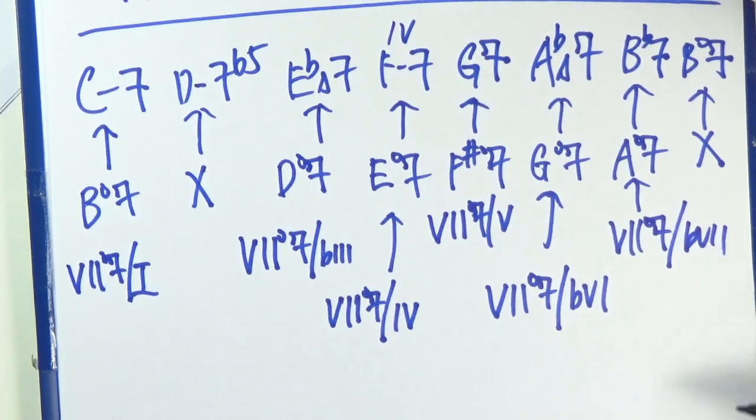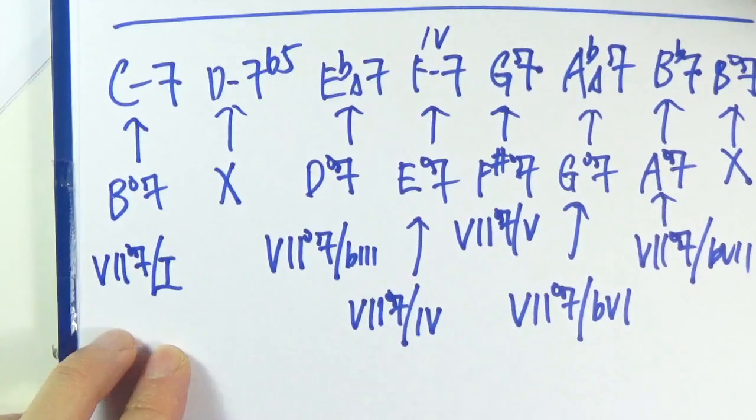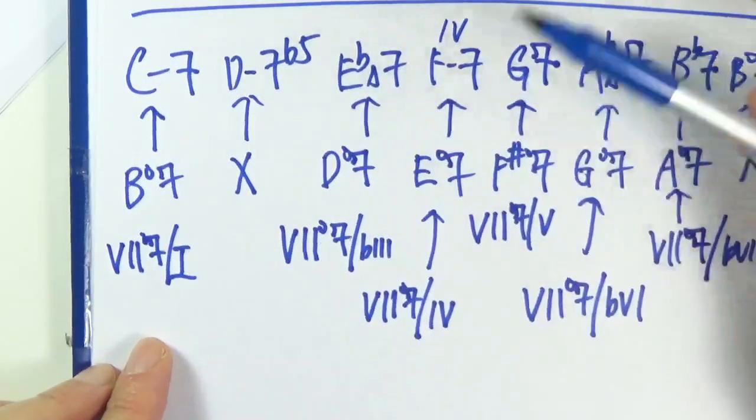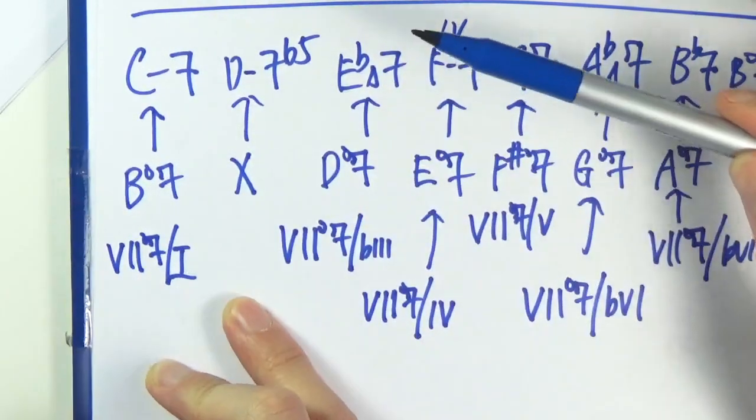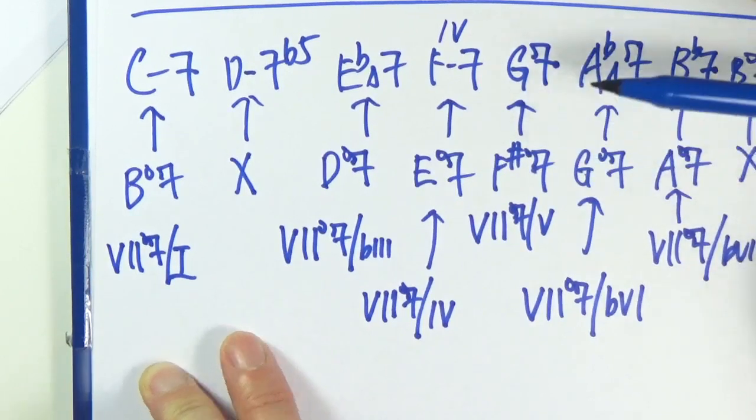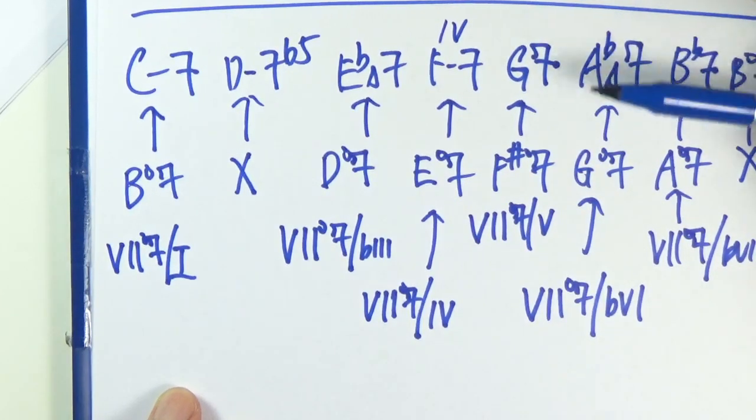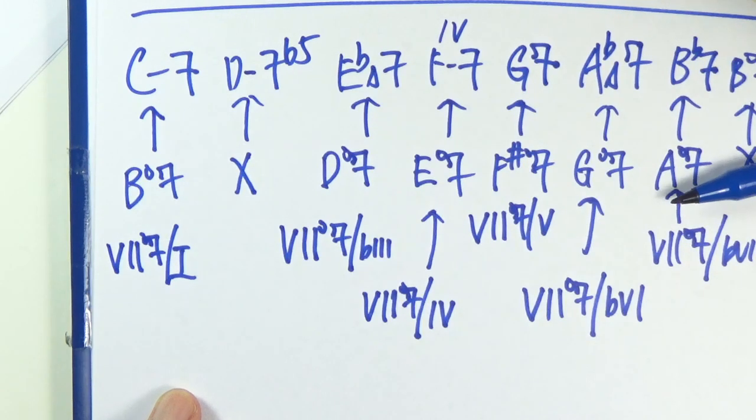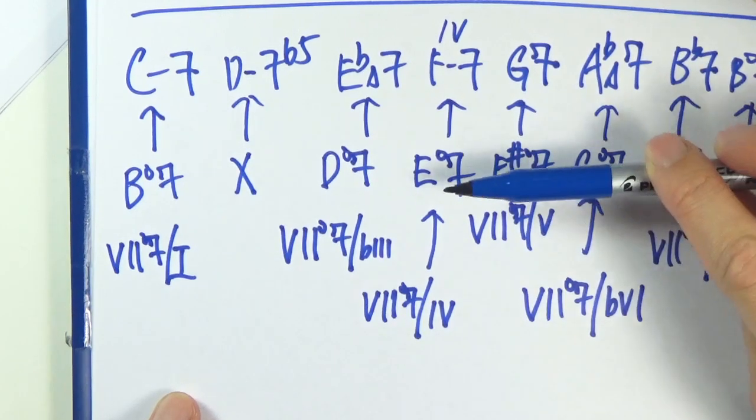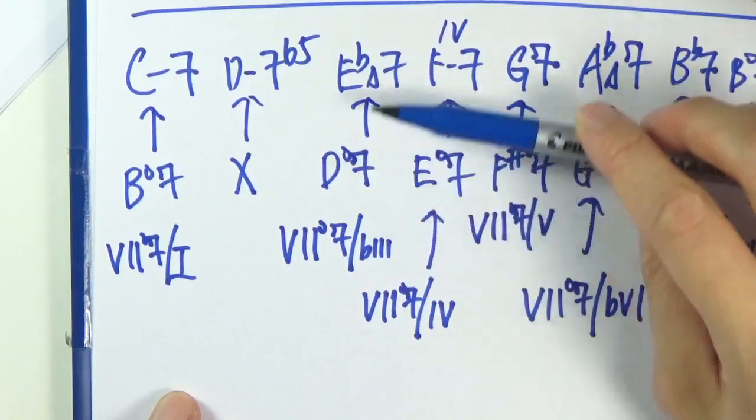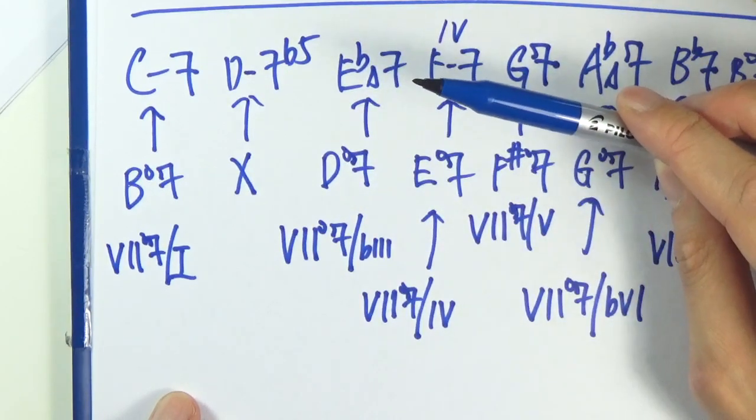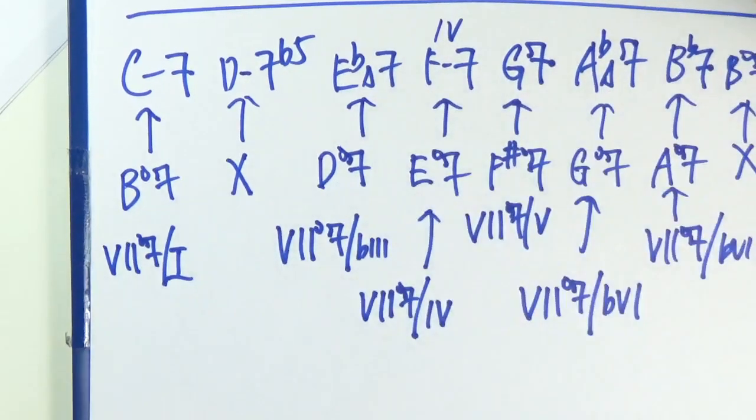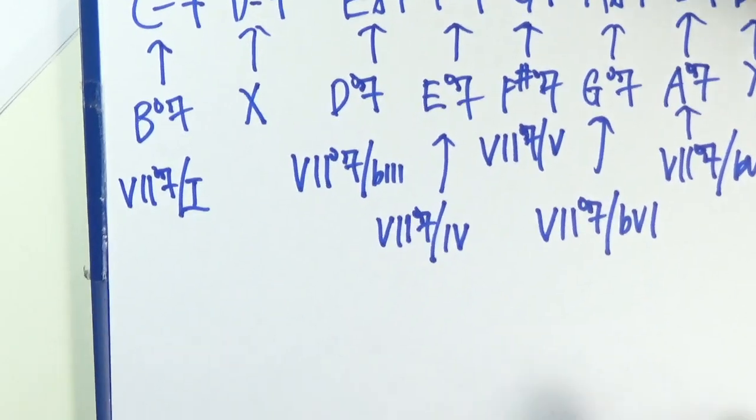Alright, hopefully I didn't make any mistakes, so let me just check it very quickly. So you can leave a comment if I did make any mistake. So Ab G, Bb A, I think I'm good. So that's it for this exercise.